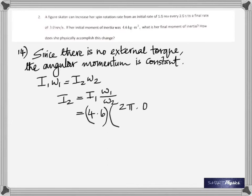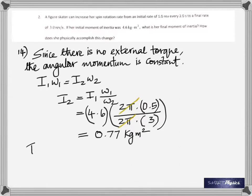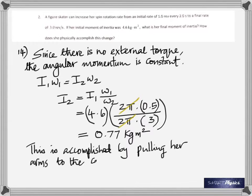I1 is given as 4.6. Omega is 2π times the frequency, which is 0.5, so finally you get 0.77 kilogram meter squared. How does she accomplish this change? That's the second part. How does she physically accomplish this change? The figure skater—how does she manage to change? What brings her arms in, that's it. This is accomplished by pulling her arms to the center or towards the axis, pulling her arms in, because the moment of inertia has decreased.